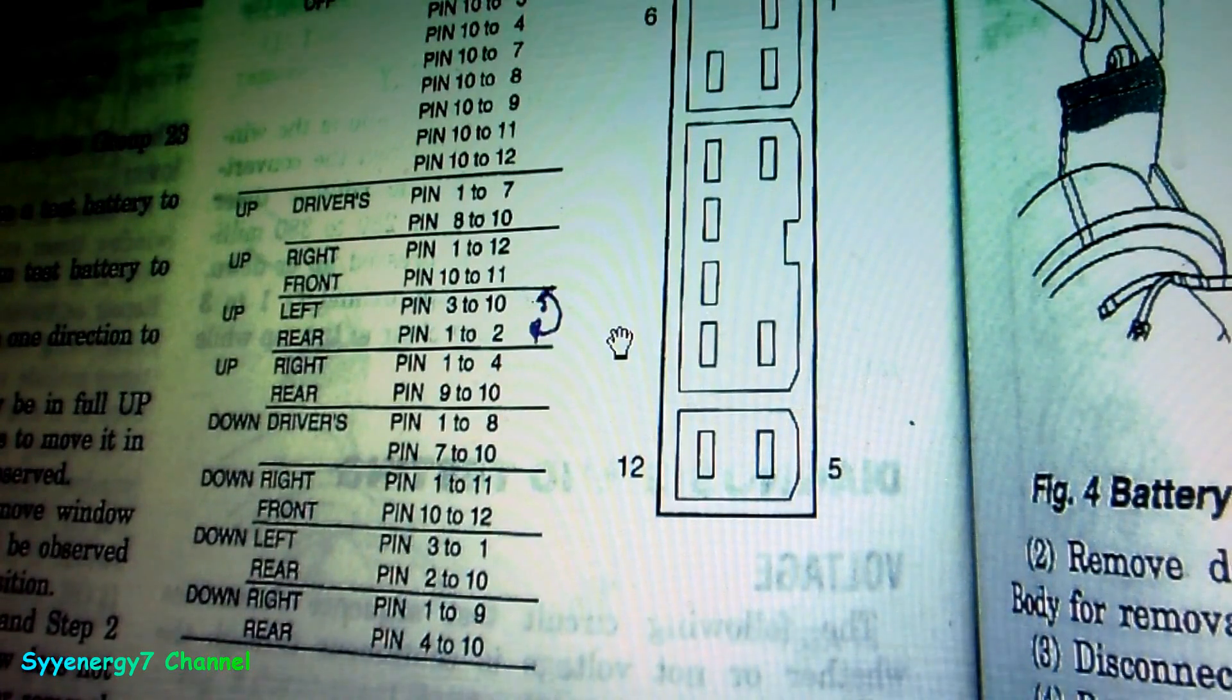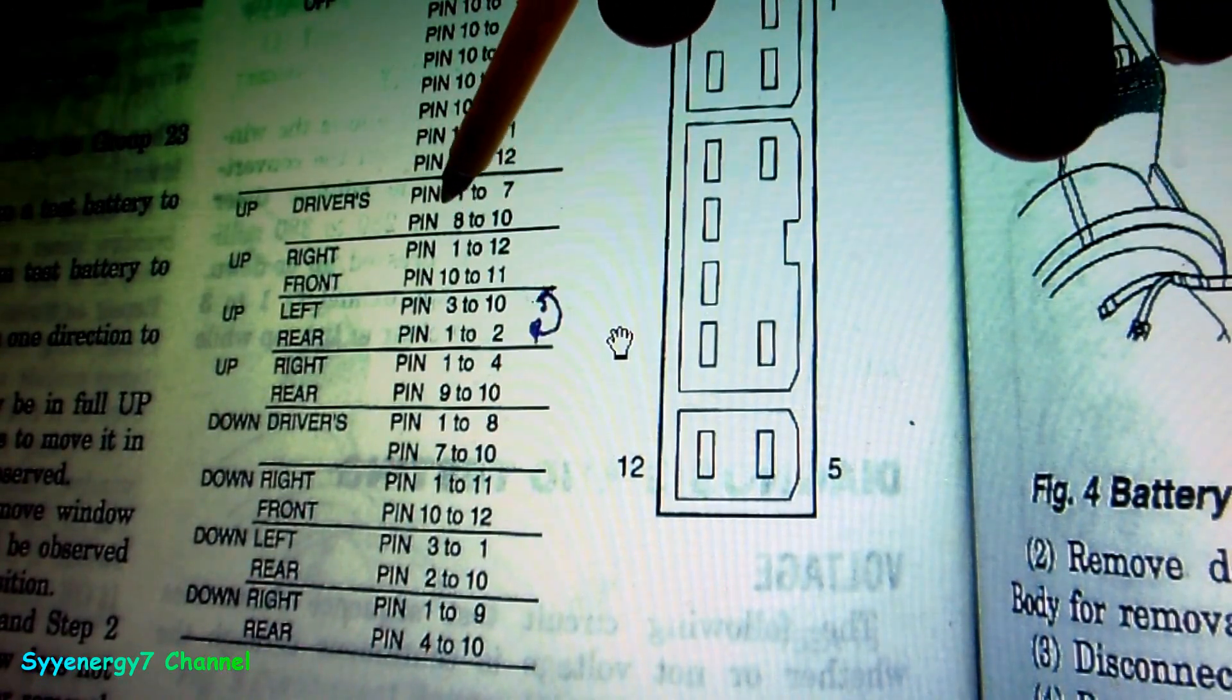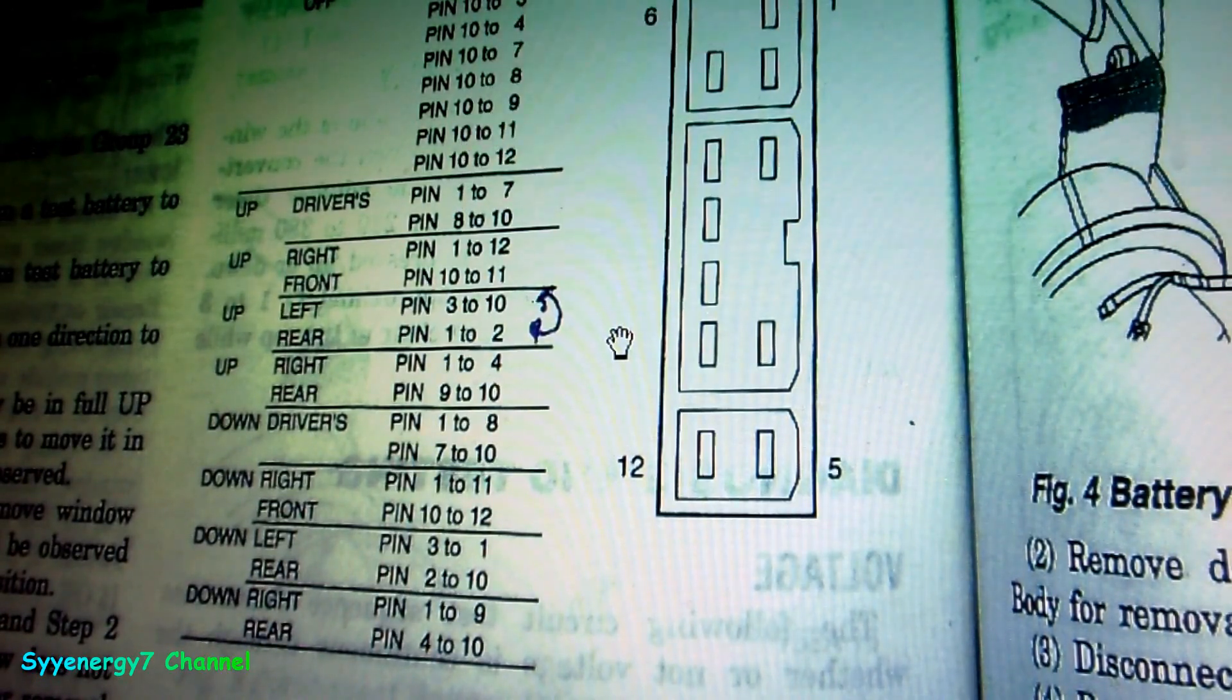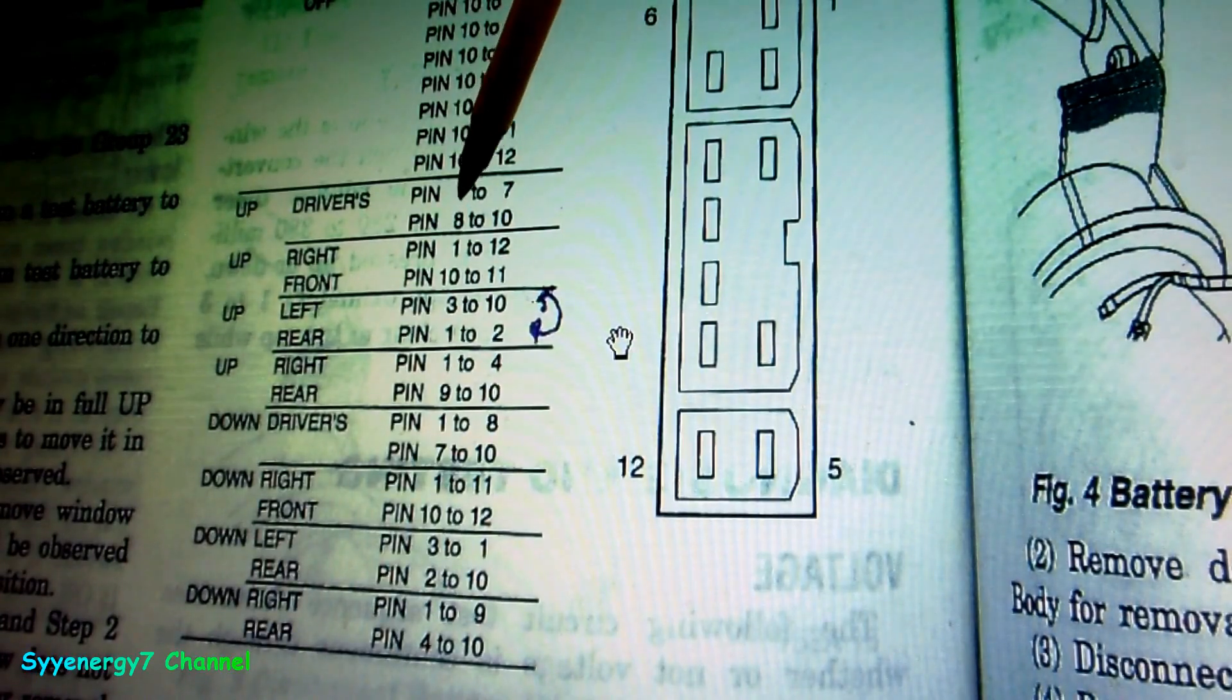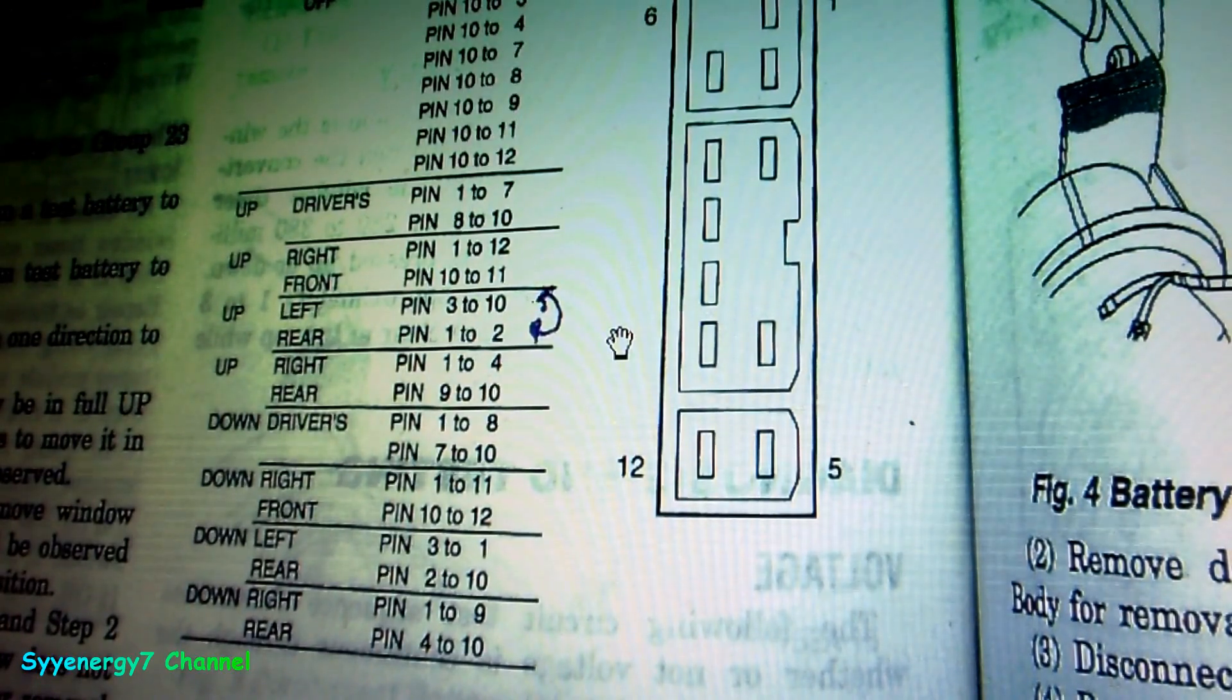It's not necessarily going from 2 to something else. In other words, 8 to 10 is the power for driver up, and then 1 to 7 - that's when you saw me make the window go up. I had it powered from 8 to 10, then I used 1 to 7. I had a wire in 1 and I touched it to 7 and made the window go up.